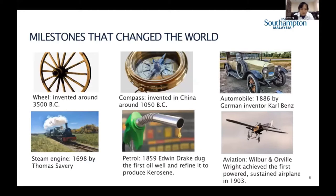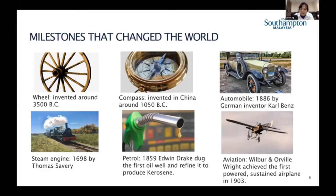Looking at milestones that changed the world: the wheel, said to be the most important invention, was invented around 3500 BC, with the pulley following about 1,900 years later. The compass, one of the four great ancient Chinese inventions, was invented around 1050 BC. The automobile came in 1886, invented by German engineer Karl Benz.